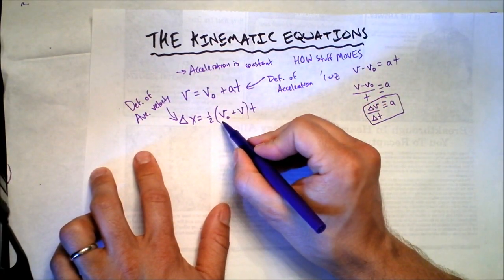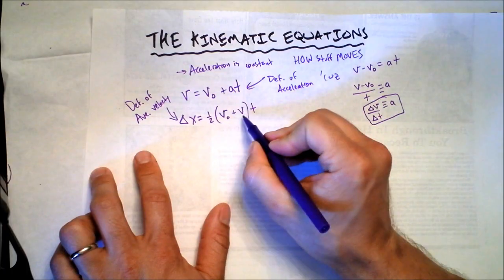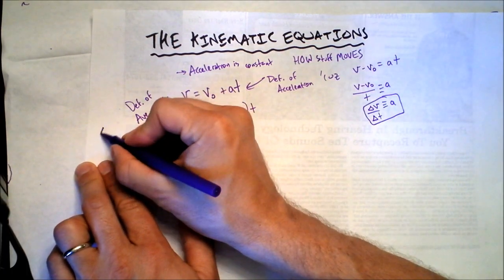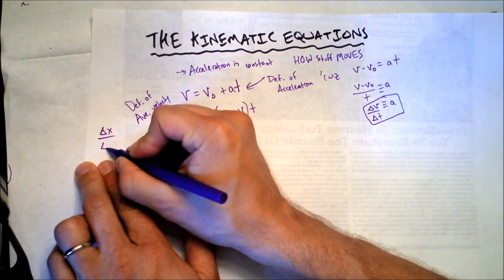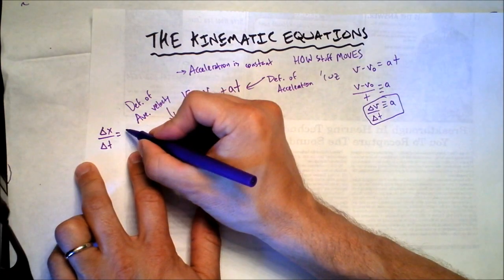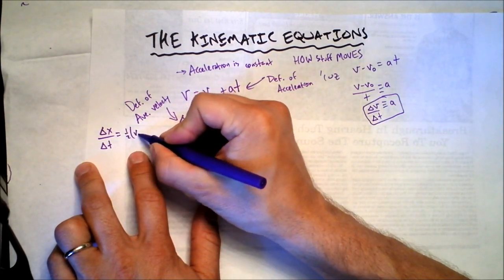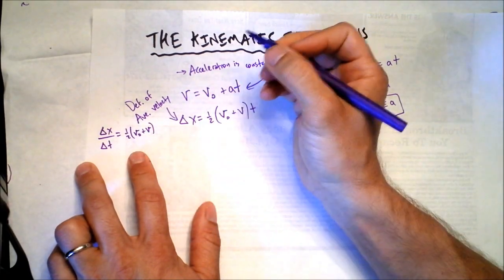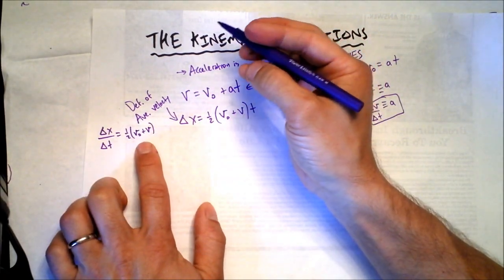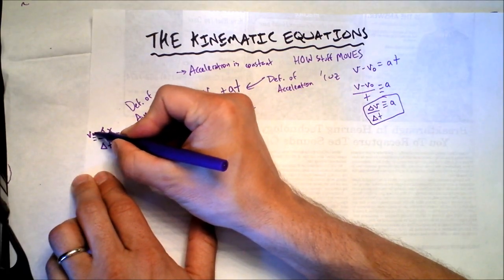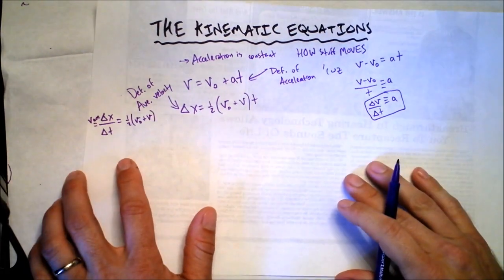We have to use it only when the acceleration is constant. If we divide by delta t on both sides, we'll get delta x divided by delta t equals one half the initial velocity plus the final velocity. That's what average velocity is. So that's why we can say this is the definition of the average. You have to be very careful with that.